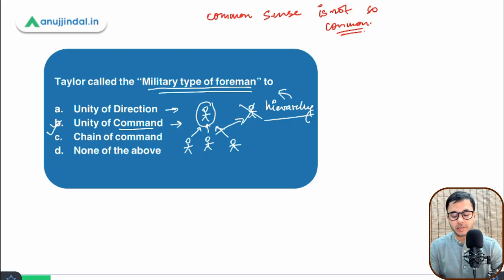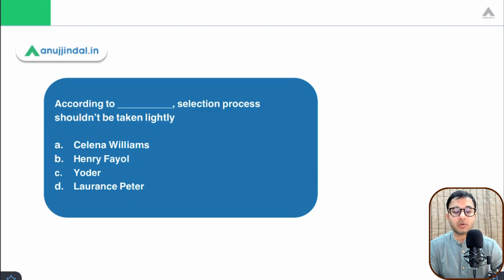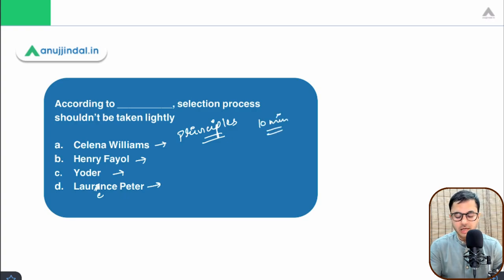Let's come to the second question. According to [blank], selection process should be taken lightly—Celena Williams, Henry Fayol, Yoder, and Laurence Peter. The spelling of Laurence is incorrect here, so I'm correcting it—it's E and not A. Your objective is to not only answer this question but at the same time, go online and read the principles and all the theories given by all these people. Very important. If you don't do that, you're not taking full advantage of these sessions. Spend 10 minutes each on every theorist. That will be enough, and you will have covered four principles, not one.